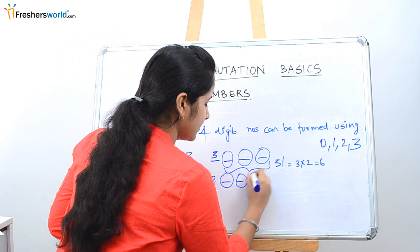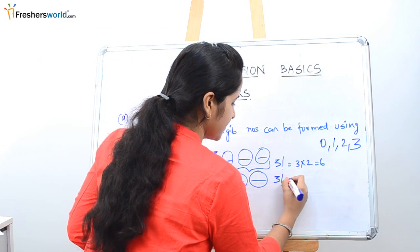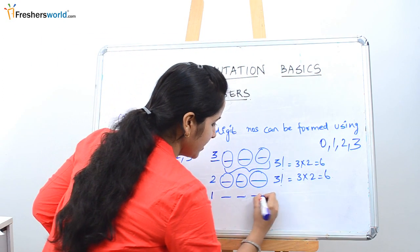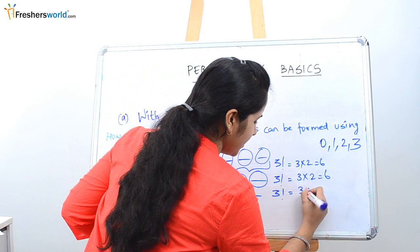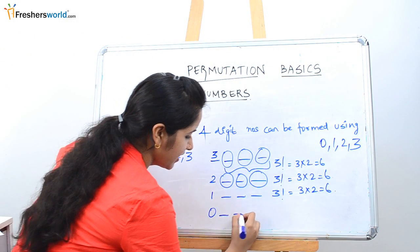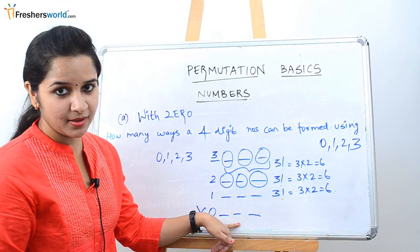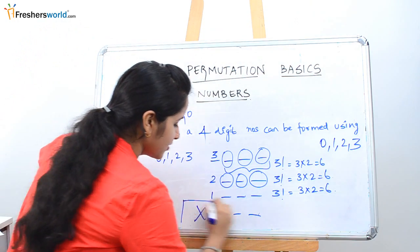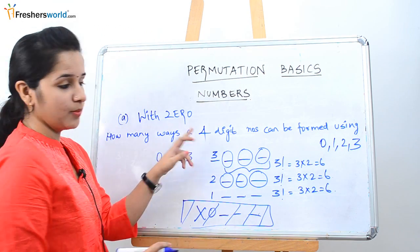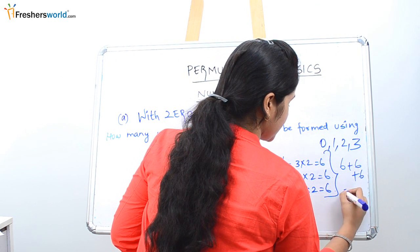For 2 in the first place, the remaining three places can be filled in 3 factorial = 6 ways. For 1 in the first place, similarly 3 factorial = 6 ways. Now for 0 in the first place — if you put 0 first and fill the other numbers, it becomes a three-digit number, not a four-digit number. So this possibility is not valid. Therefore, the total number of ways a four-digit number can be formed using 0, 1, 2, 3 is 6 + 6 + 6 = 18 ways.